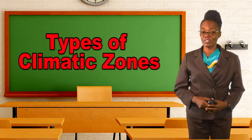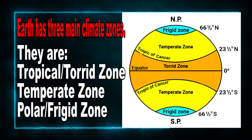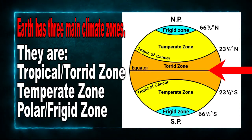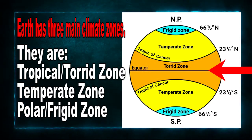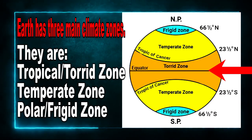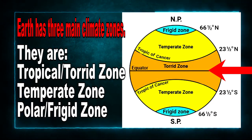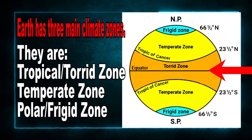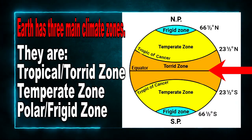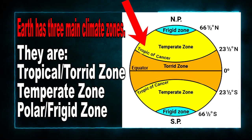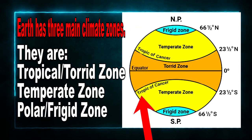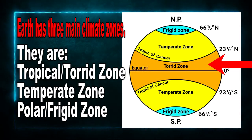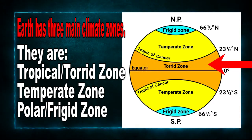Let's examine the types of climatic zones. Earth has three main climatic zones. They are the tropical or torrid zone, which is located directly at the center of the earth. Where the equator runs, the torrid zone is located there. The torrid zone or tropical zone is bordered by the Tropic of Cancer to the north and the Tropic of Capricorn to the south. That shaded area in orange on the globe represents the tropical or torrid zone.